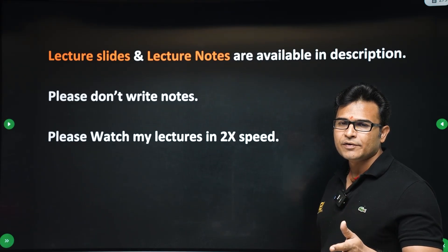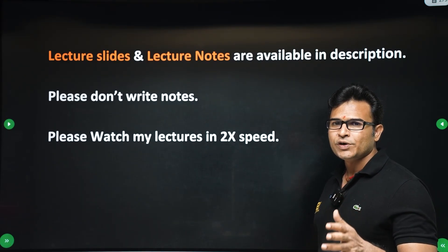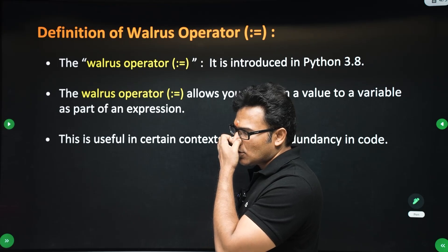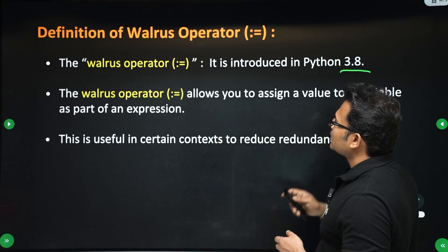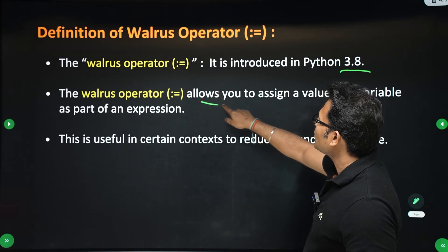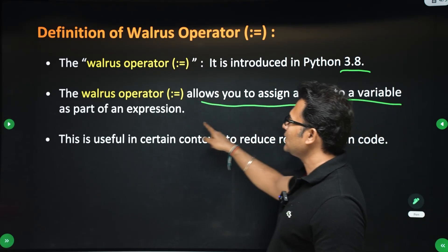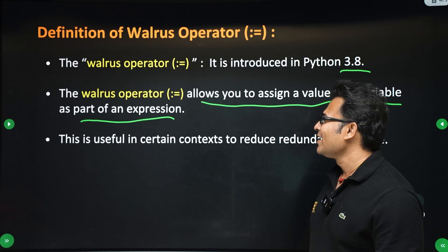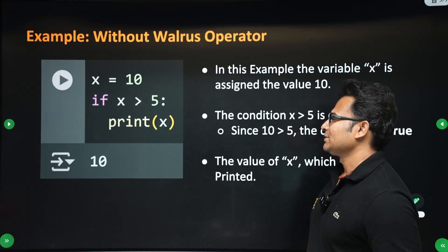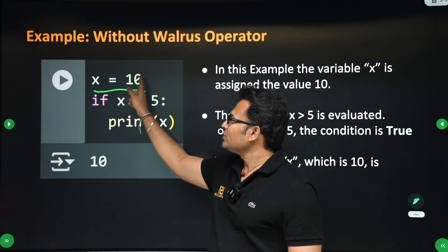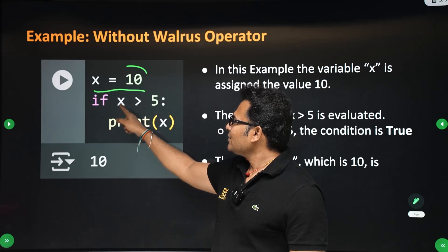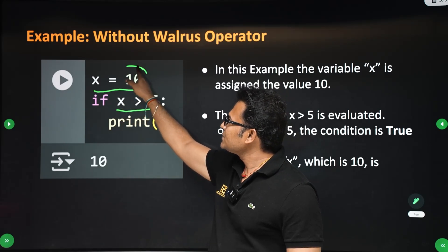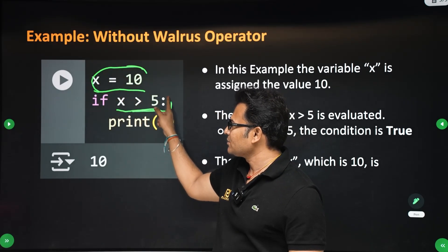Don't write the lecture notes — they will be given to you in the description. Watch my videos at 2x speed, I will be very slow. So, what is the walrus operator? It is introduced in Python 3.8. It allows you to assign a value to a variable as part of an expression. For example: let x equal to 10 — that is an assignment. And testing if x is greater than 5 — that is condition testing. Those are two separate things.